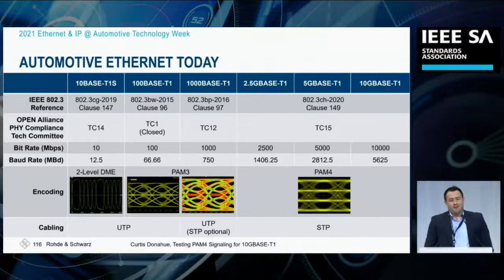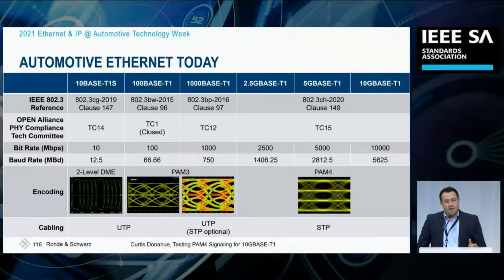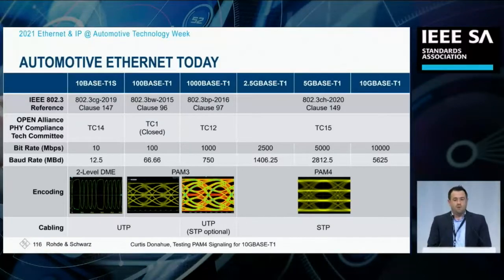This is a nice summary table indicating the differences in bandwidth requirements for the specifications, looking at the line encoding from two-level DME to PAM-4, which is what I'll be talking about for the most part today, and the different types of medium used, either UTP or STP.